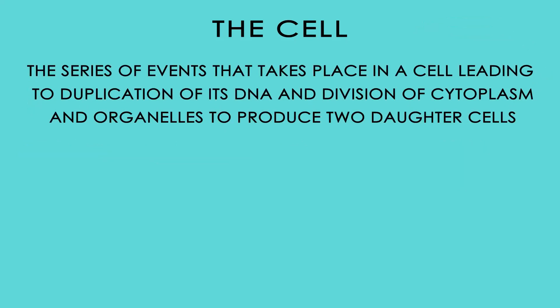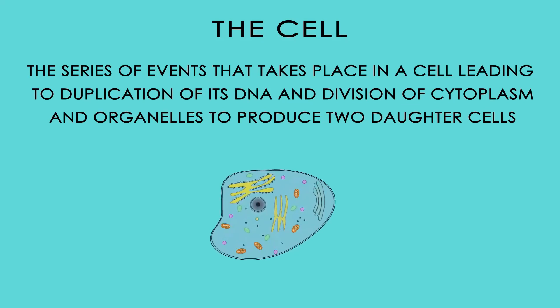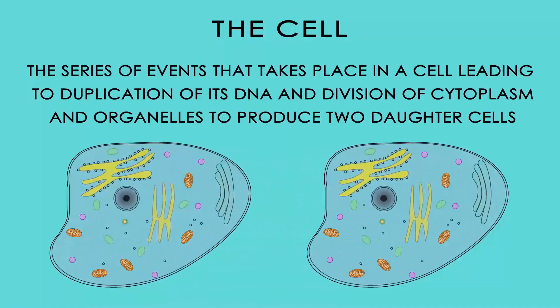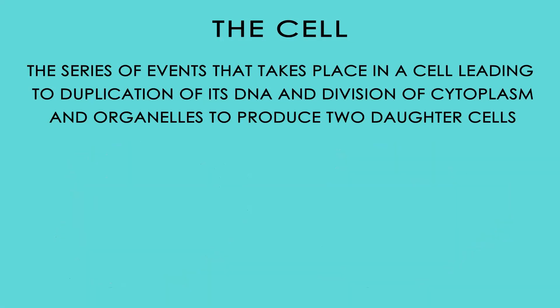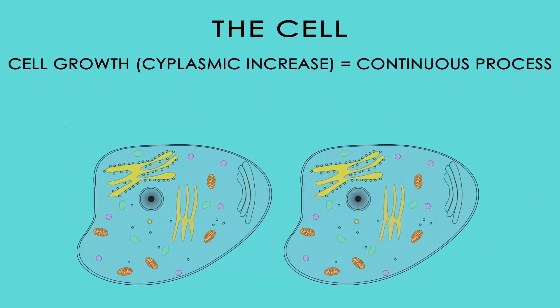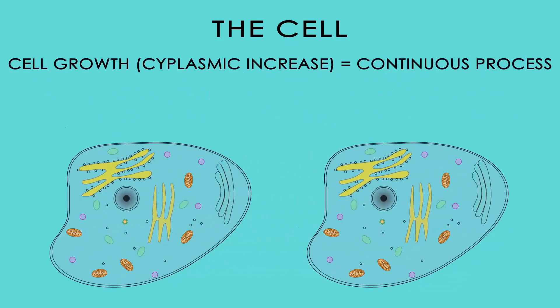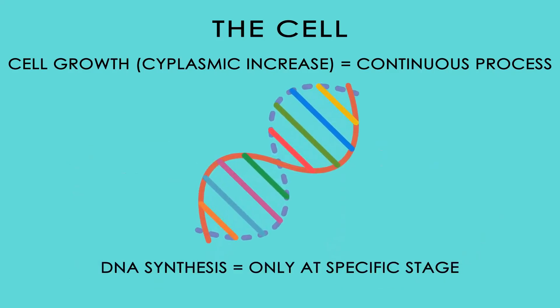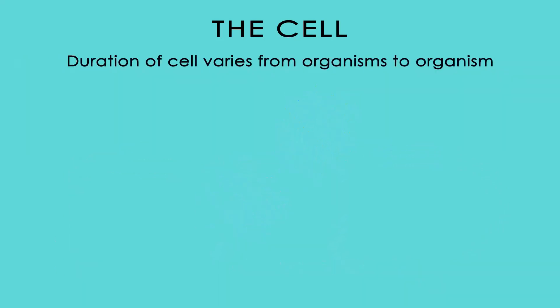The cell cycle, or cell division cycle, is a series of events that takes place in a cell leading to duplication of its DNA and division of cytoplasm and organelles to produce two daughter cells. Cell growth, also called cytoplasmic increase, is a continuous process, but DNA synthesis occurs only at a specific stage.